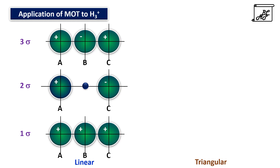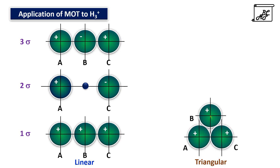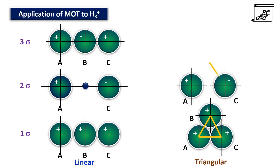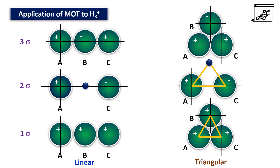When we consider a triangular arrangement of the three atoms, in case of bonding the three atomic orbitals will be arranged together. In case of non-bonding, the two atomic orbitals A and C will be arranged, coming a little closer to each other compared to the linear arrangement. And in case of 3 sigma, this will be the arrangement of the three atomic orbitals.